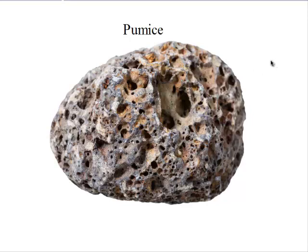So these are some examples of extrusive igneous rocks. Remember, extrusive igneous rocks are formed on the surface of the earth. They are shiny, they have small crystals, and sometimes they are vesicular. Examples include basalt, obsidian, and pumice.